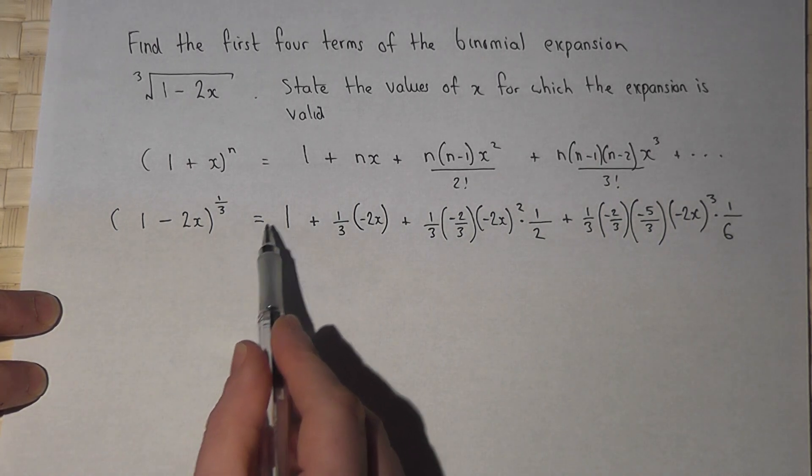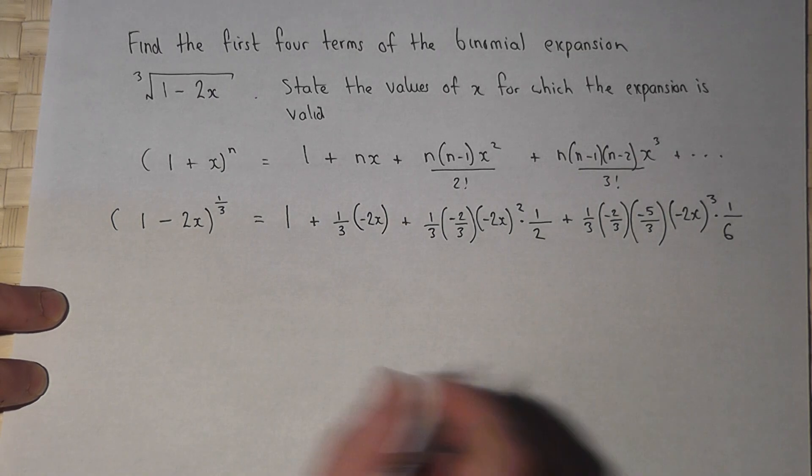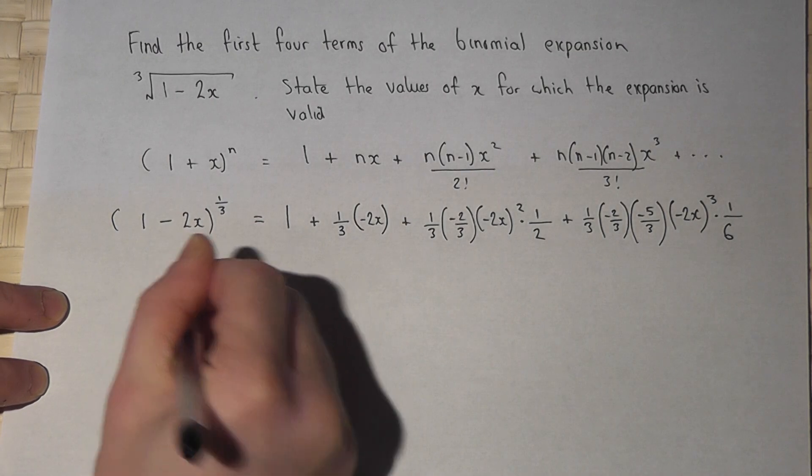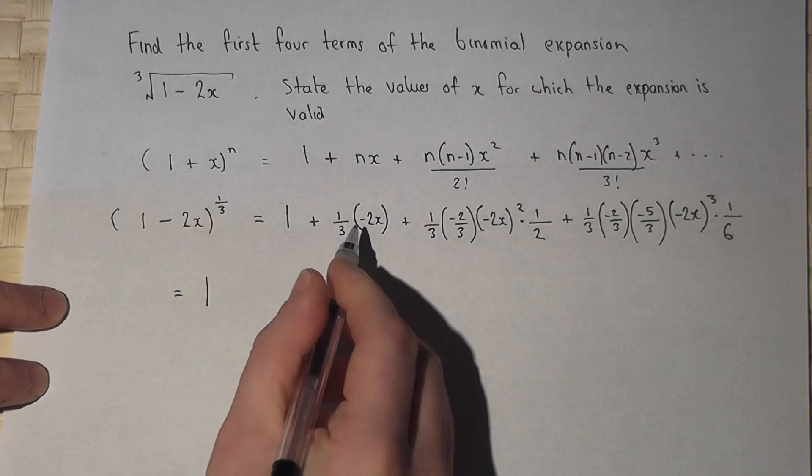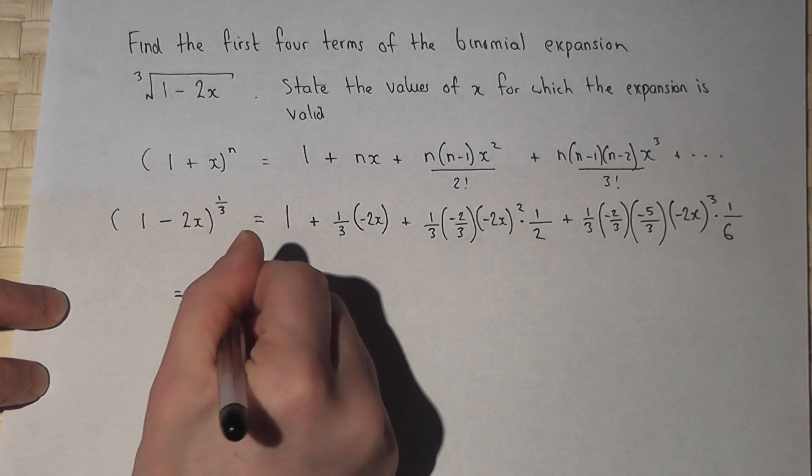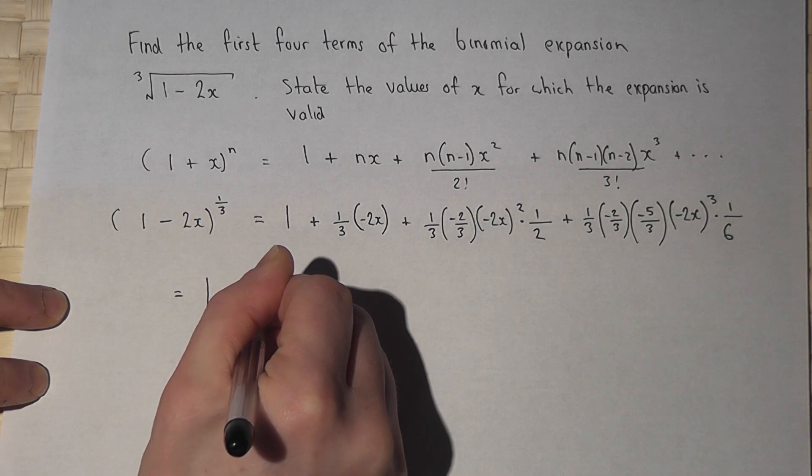I must now try to work out all of this and make it simpler. Right then. 1. Minus 2 times a third is minus 2 thirds x.